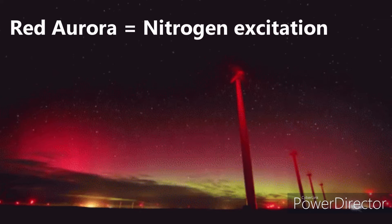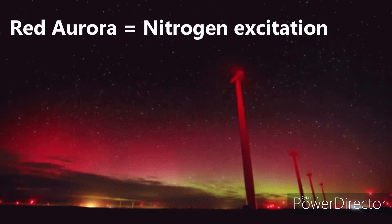Sometimes it will be reddish. What is the reason for this? In our atmosphere, there is oxygen, and there is a gas — predominantly nitrogen. Those nitrogen atoms, as high energy particles become low energy particles, emit photons in red-colored waves.